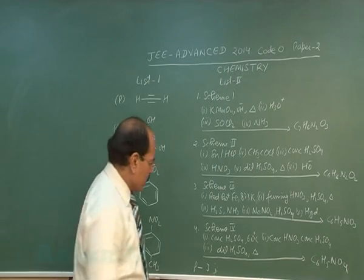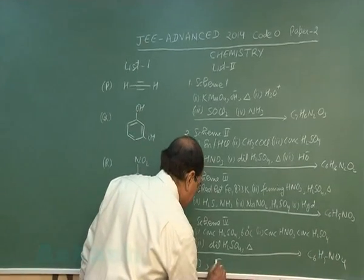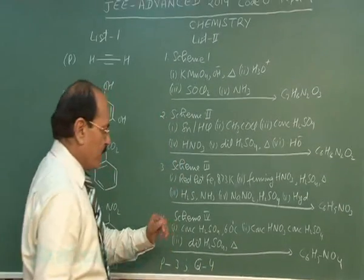So we get a nitro group attached to the ortho position with respect to one of the OH groups. So compound Q matches with scheme four.